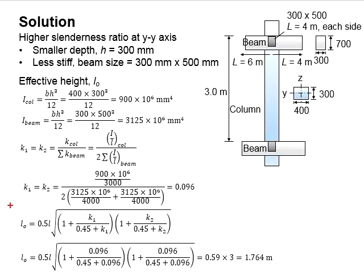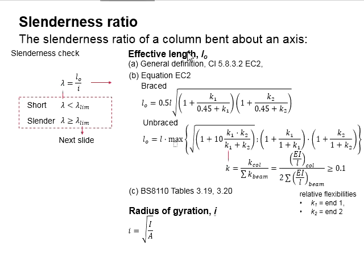The equations to determine the effective height is given here. This is meant for the brace frame, and within there, there are the k1 and k2. k1 and k2 represent the relative flexibility of the column at end 1 and end 2. To determine the k1 and k2, you need the second moment of inertia and the overall height of the column.